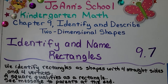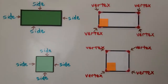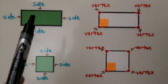Lesson 9.7: Identify and name rectangles. We identify rectangles as shapes with four straight sides and four vertices. A square qualifies as a rectangle. There's a message to parents at the end. A rectangle is any shape that has four square vertices. A square is also a rectangle because it has four straight sides and four square vertices.